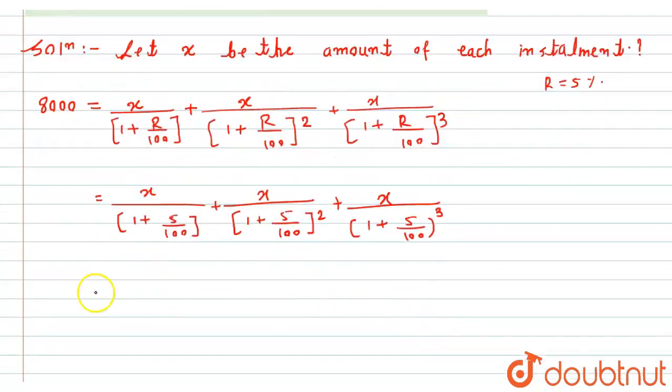So, agar hum yahan se simplify kar le, ye ho jayega 5 ko 20, it will become 20. 21 by 20. 20 plus 1 will become 21. While this 20 will go in numerator. So, yahan se hume yahan pe mil jayega 20 of x divided by 21 plus 20 by 21 it's square into x plus it would become 20 cube divided by 21 cube into x.